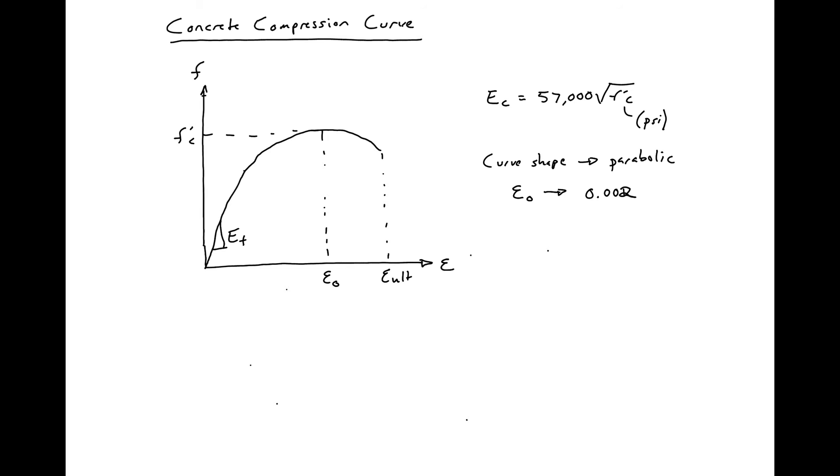For a 3 to 6 KSI concrete, the descending branch is typically taken as linear. And it will depend on the strength of the concrete as to how this descending branch will happen. So if we have a higher strength concrete, we'll have a more vertical descending branch versus a lower strength concrete.